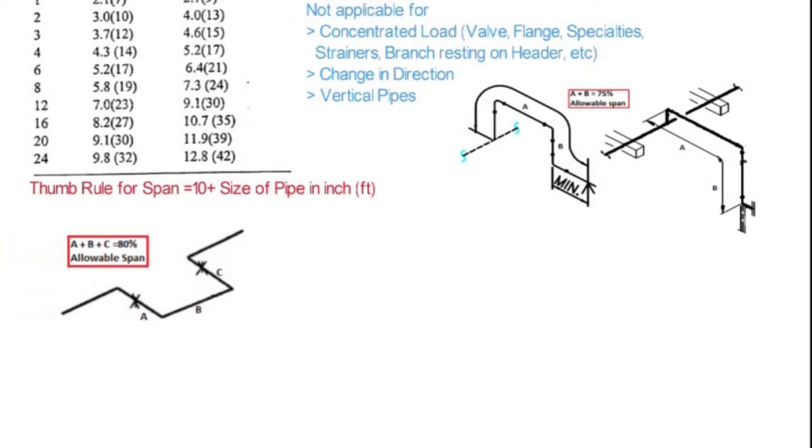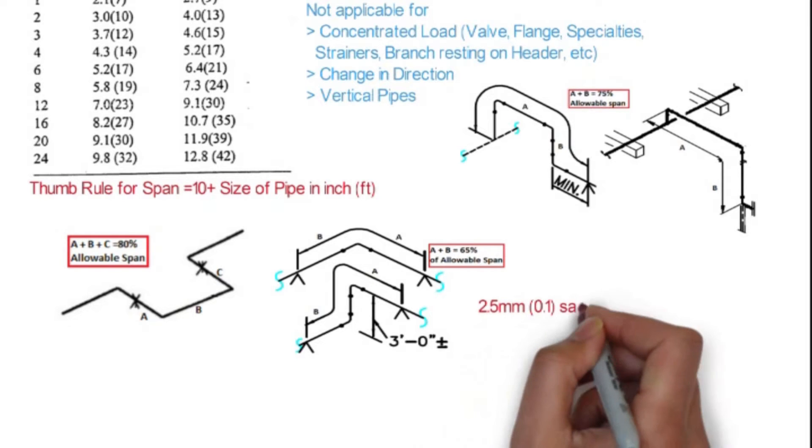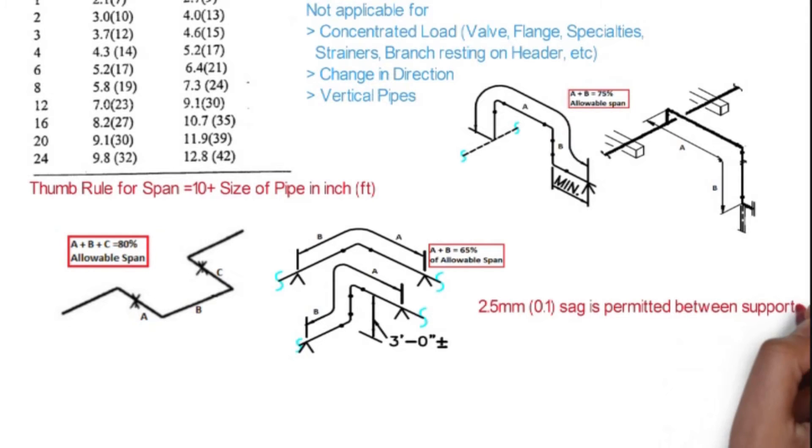In case of the loop between the two supports, it should not exceed 80% of the allowable span. In the branch run, we have to take 75% of the allowable span. Only 2.5 mm, or we can say 0.1 inch sag is permitted between the supports. If it is exceeding 2.5 mm, we have to reduce the span between the support.